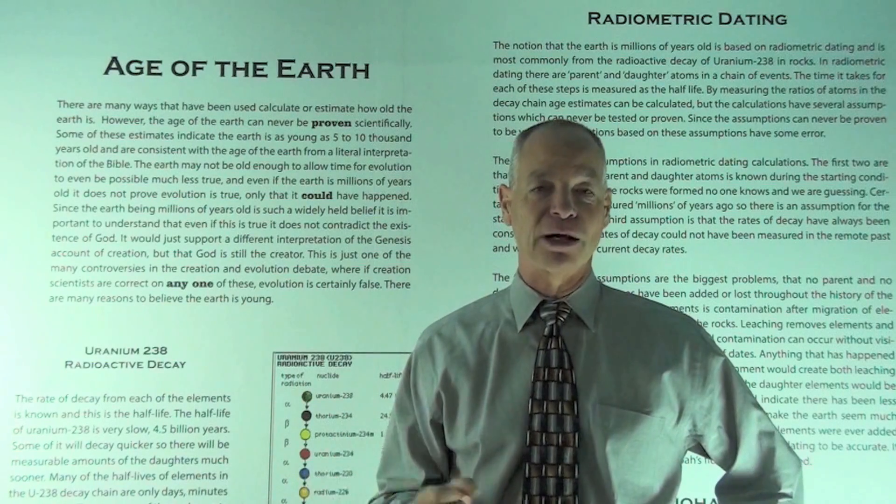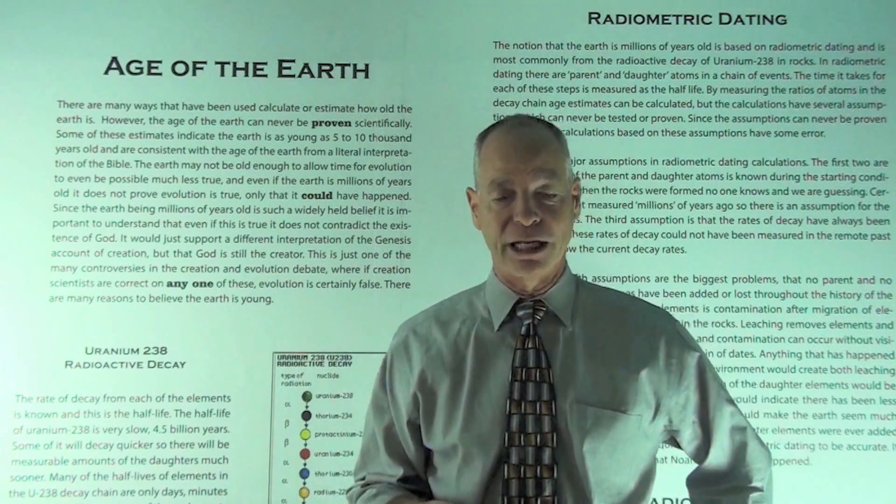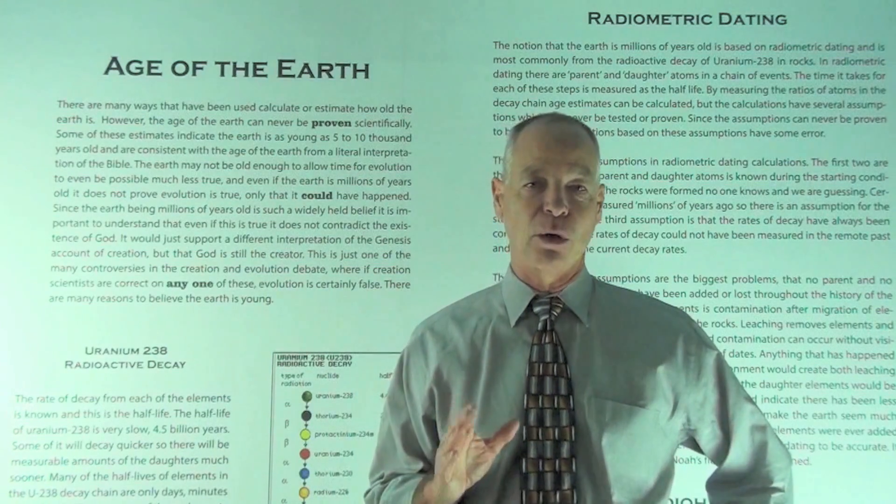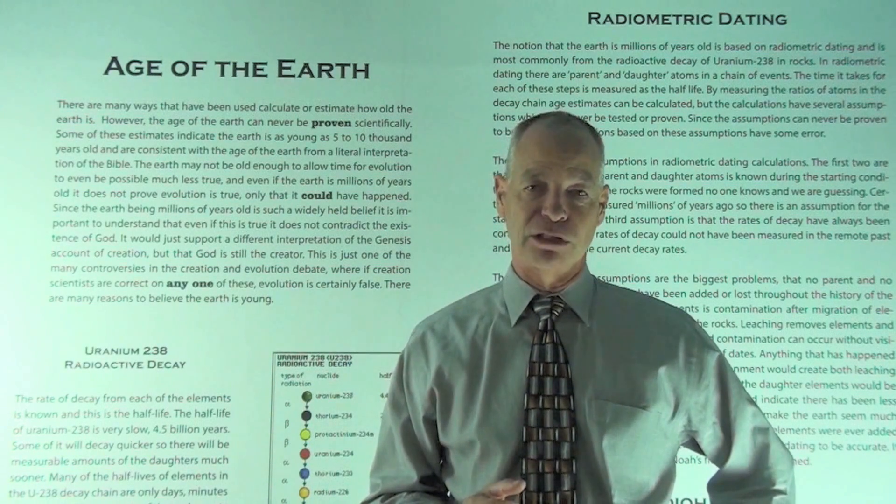So how do they determine how old the Earth is? Well, they use dating methods. Some people are familiar with carbon dating, but that can't be used because that can only be determined for things that are thousands of years old, never millions of years old.